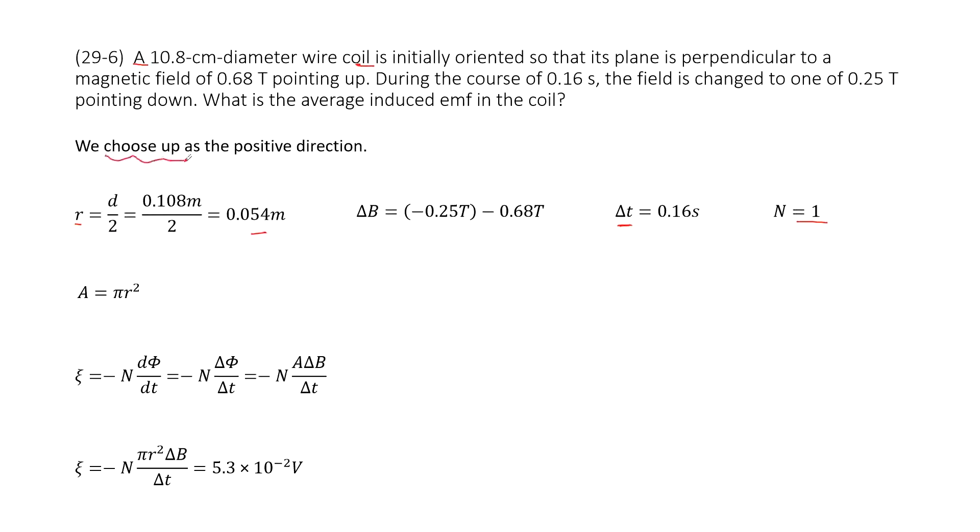So we can take the positive direction as, we can take the up as a positive direction. So that means the initial is 0.68T. The final pointing down becomes negative 0.25T.